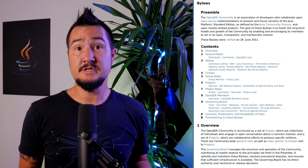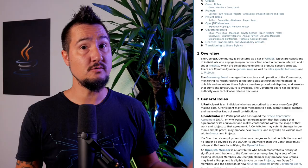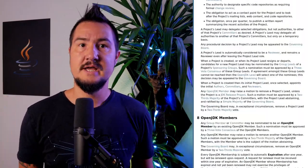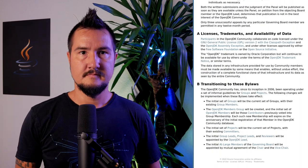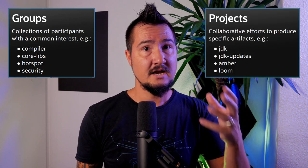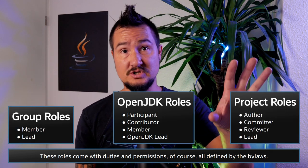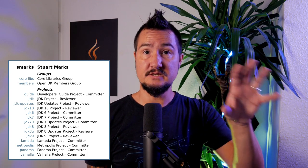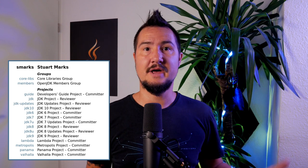To summarize, the OpenJDK community is structured as a set of groups — individuals around topics like the compiler or tooling — and a set of projects that are collaborative efforts to create specific artifacts, like the project that works on JDK 19 or Project Amber. There are community-wide roles — participant, contributor, and member — as well as roles specific to groups and to projects: author, committer, reviewer, and lead. Take Stuart Marks, for example. He's a member of OpenJDK itself and the CoreLibs Group, reviewer on JDK and JDK updates, and committer on a lot more projects like Panama and Valhalla — busy guy.